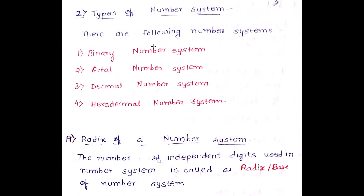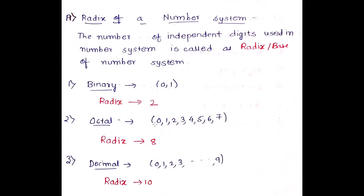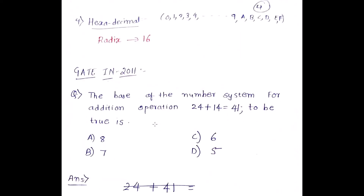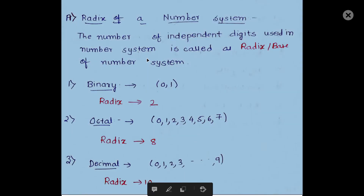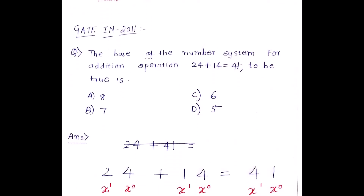To summarize: binary has only zero and one — radix is two; octal has zero to seven — radix is eight; decimal has zero to nine — radix is ten; hexadecimal has zero to nine and A to F — radix is 16. The radix is used to indicate the kind of number system. If a number is given with radix two it's binary, radix eight it's octal, radix ten it's decimal, radix 16 it's hexadecimal.